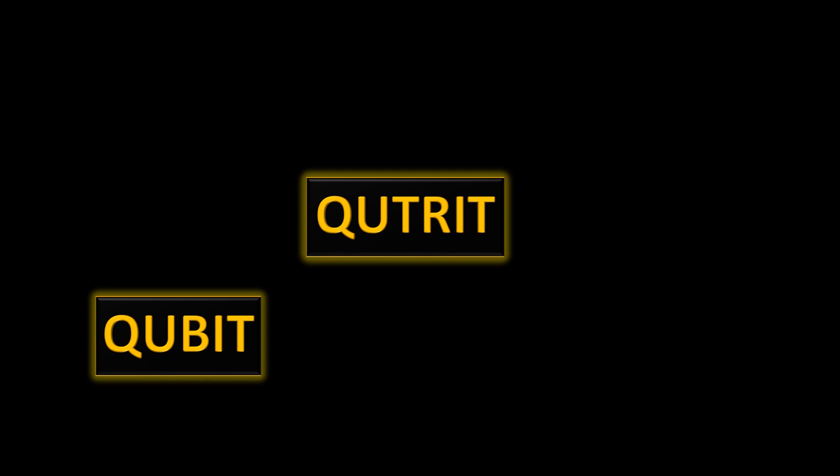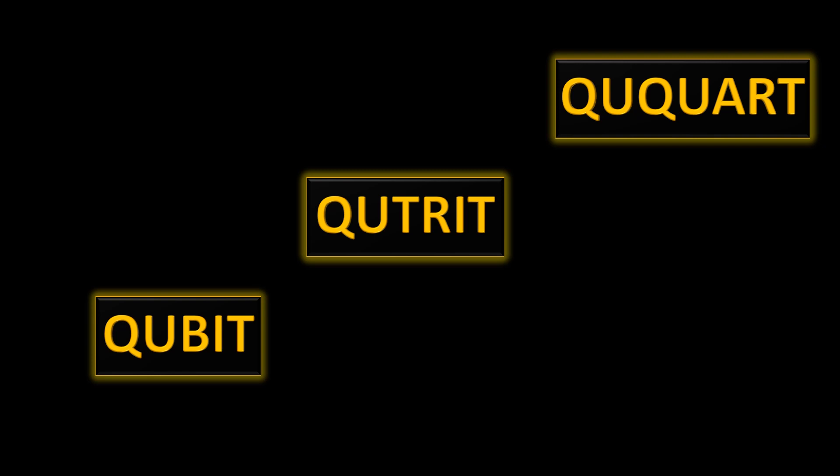Apart from qubit we also have something called qutrit and there's also something called ququart. So qubit is the simplest possible quantum mechanical system. Here the quantum mechanical system is two-dimensional or you can say it's a two-level quantum mechanical system where the two possible states that a qubit can take after measurement is either zero ket or one ket. Of course the qubit can be in the superposition of these two states.